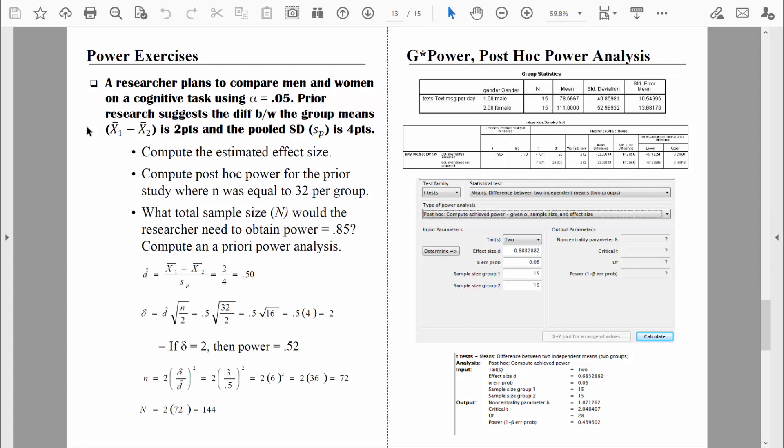It says a researcher plans to compare men and women on a cognitive task using an alpha of 0.05. Prior research suggests that the difference between the group means is two points and the pooled standard deviation is four points. So we don't have all the details about that research study, but we do have the important numbers that we need. First we're asked to compute the estimated effect size. We have all the information that we need to do that. Let's switch views and get right to it.